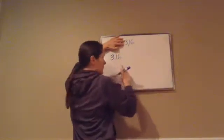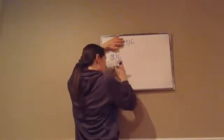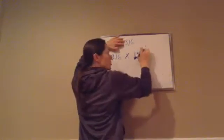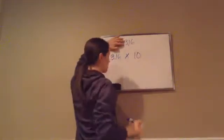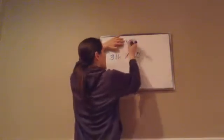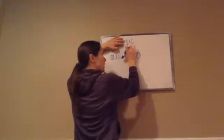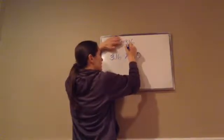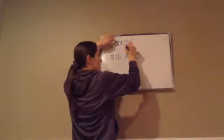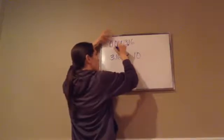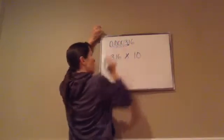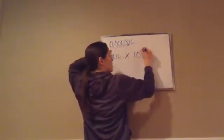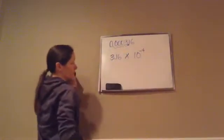Scientific notation is always written as the number with the decimal in it, times 10 to a certain power. If my decimal was really right where we want it to be, then how many places to the left was it really in the beginning? 1, 2, 3, 4. So because we went to the left, it's going to be negative 4.